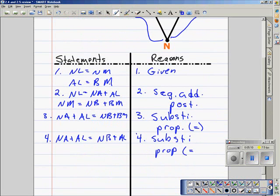Again, that's from the substitution property of equality. In step 5, we can finally say that NA is equal to NB because we can subtract AL from both sides, so that would be the subtraction property of equality.